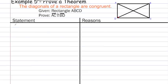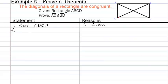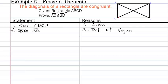The first step of any proof is to write the given. In this case, we're given rectangle ABCD, and the reason is: given. Next, we prove that AD is congruent to BC, and the reason for that is the definition of a parallelogram — abbreviated with the parallel symbol and 'ogram'.